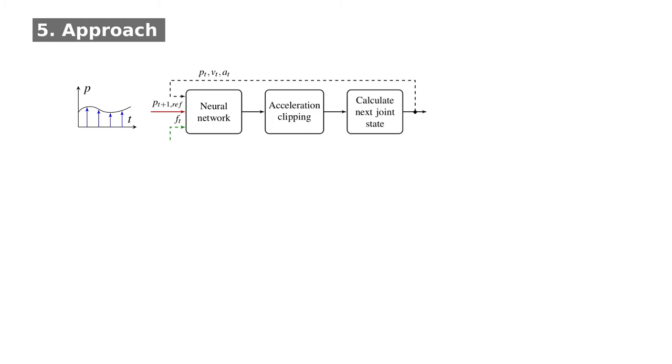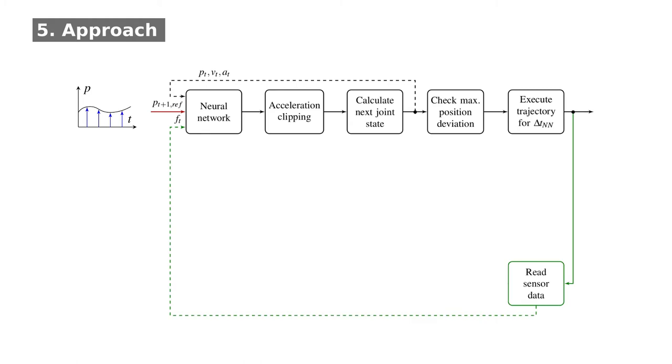Next, the kinematic state of the robot joints at the beginning of the next time step is calculated. This state is fed back to the network at the following decision step. In addition, it is used to calculate the position deviation to the reference trajectory. If the deviation is smaller than a specified threshold, the trajectory is executed for the next 50 milliseconds, and then the signals are read in.